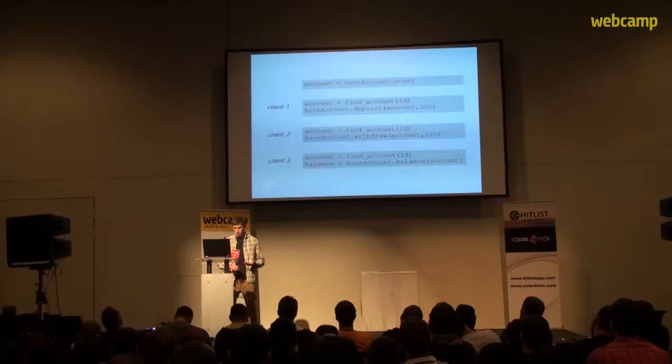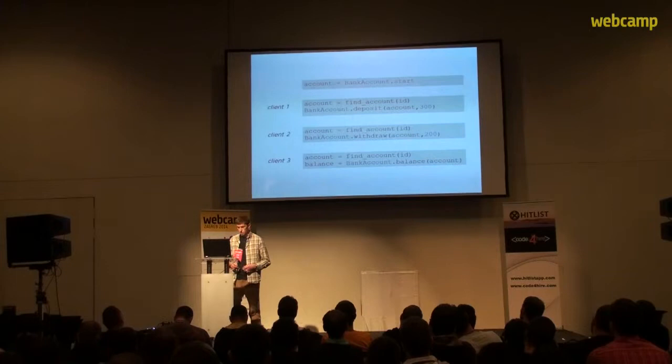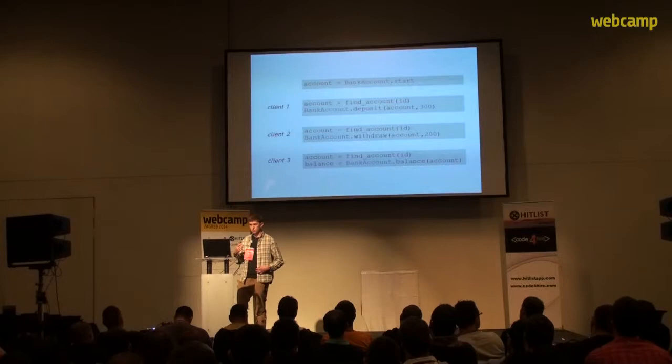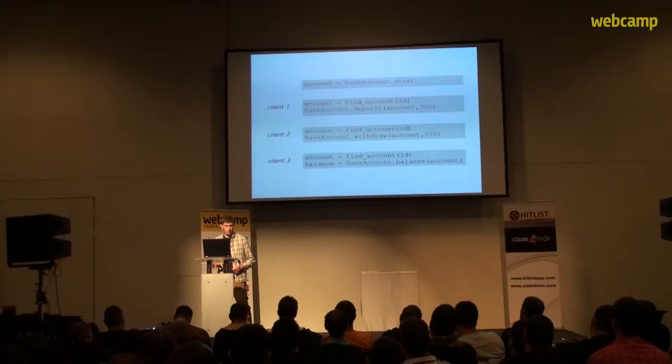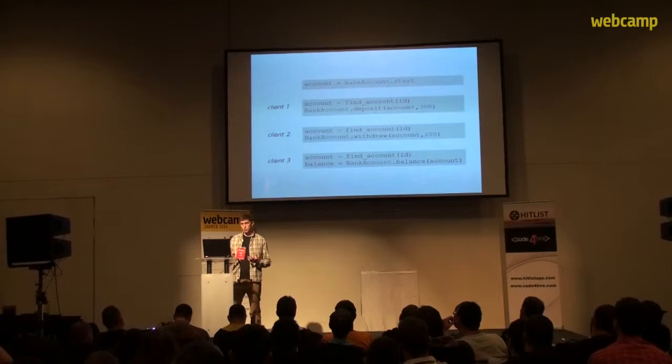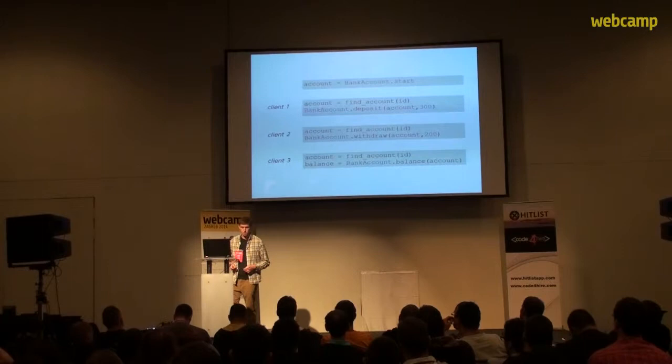We must start our actor, and by starting it we obtain its address. This address will then be used to communicate with the actor. Clients — which are completely different actors somewhere in the system — must obtain this address, and once they have it they can send messages, optionally waiting for a response. The balance will be sent back as a message. Everything is wrapped and hidden behind a function call, which is standard practice in Elixir and Erlang. Underneath, we have this message-passing mechanism taking place, but the code remains easy to follow and understand.